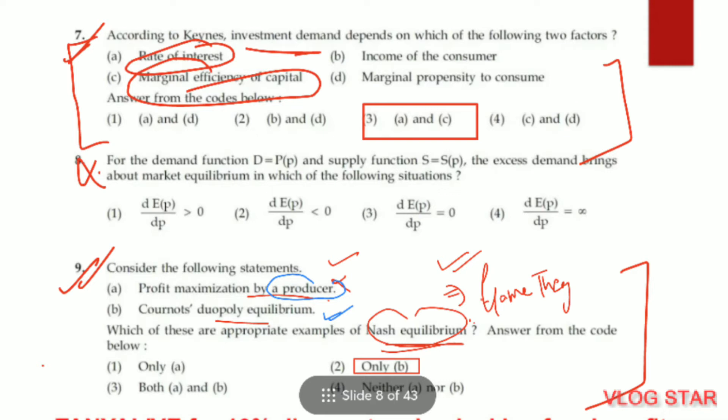Question number 8. For the demand function D = P and supply function S(P), the excess demand brings about market equilibrium — option D, the fourth, is the correct answer. Question number 9. Consider the following statements — which are appropriate examples of Nash equilibrium? Nash equilibrium comes from game theory, and to play any game we need at least two members. So the second option is correct: Cournot's Duopoly equilibrium, since duopoly involves two players. The first option is not correct.